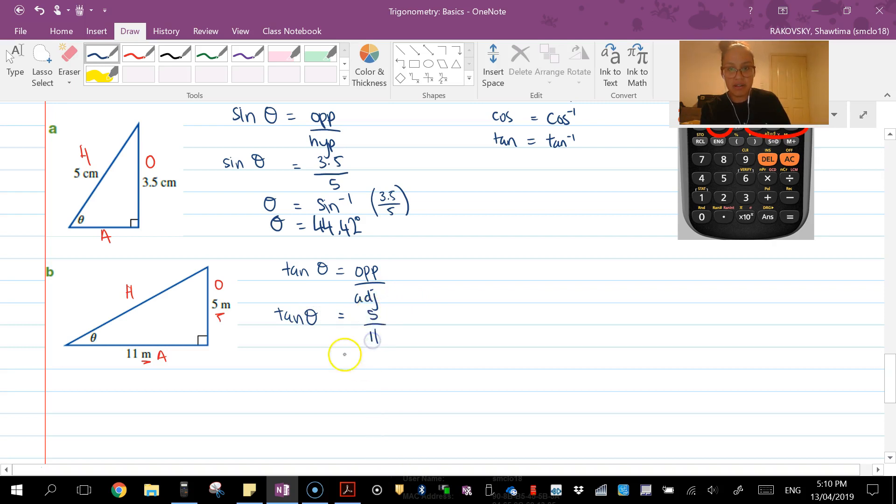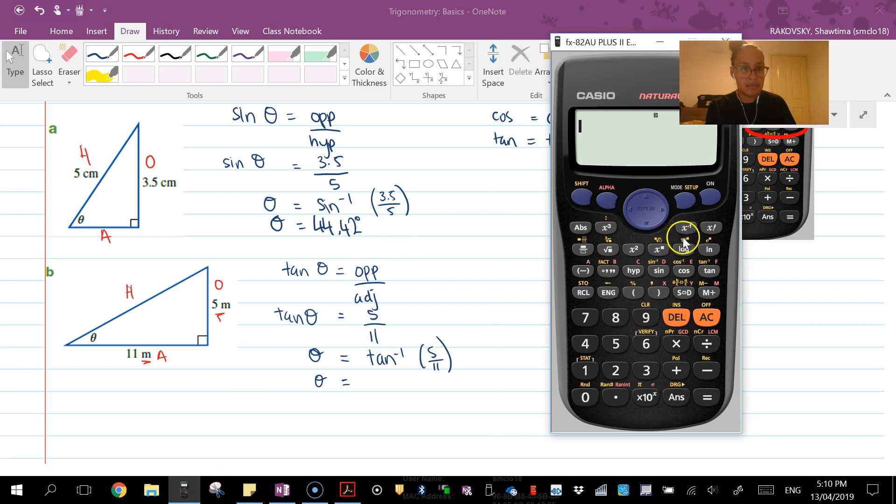I'm trying to find theta, so it's tan⁻¹ of 5 over 11. You'll notice I've used a different format. Remember, a fraction is a division. And here we go: 24.44 degrees.